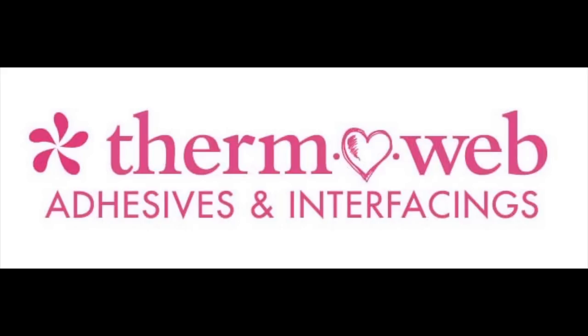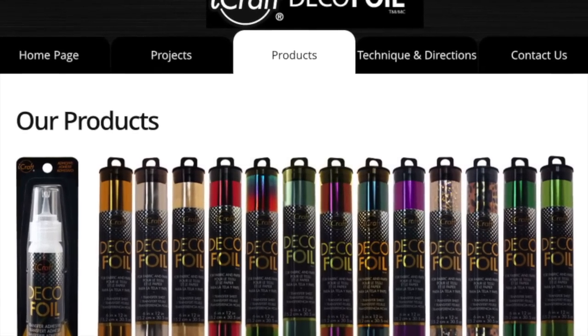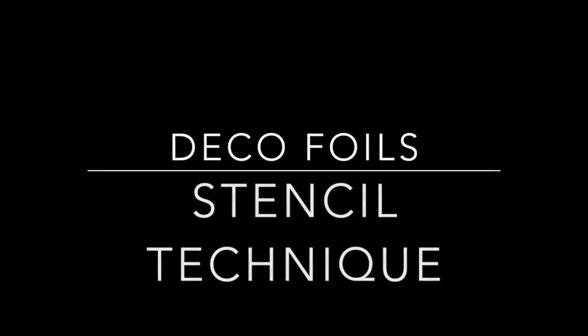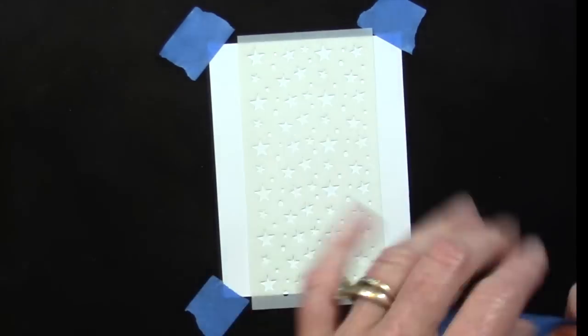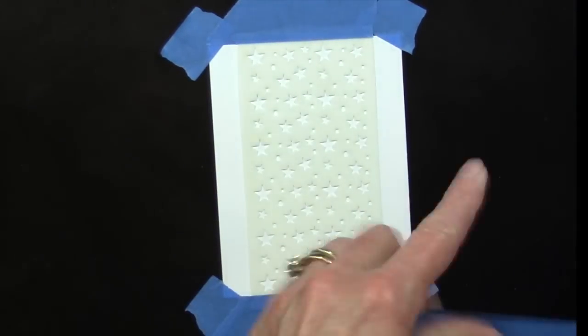This video will guide you in using the iCraft deco foils with the stencil technique. Begin by securing your work surface down with washi tape, masking tape, or any other removable adhesive, and then secure the stencil in the same manner on top of your work surface.